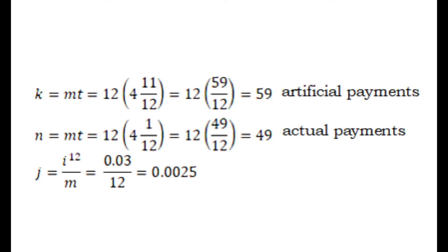We have 59 artificial payments in this particular case. How about for the actual payments? We have to solve it this way. N equals M times T. M again is 12 since it's monthly, and T is 4 and 1 over 12. That is 12 times 49 over 12. We have to cancel out 12 and 12. So that is 49 actual payments.